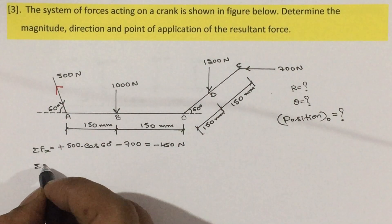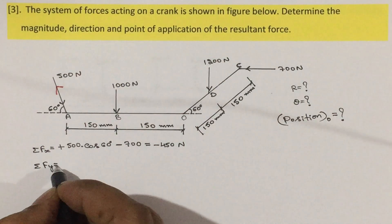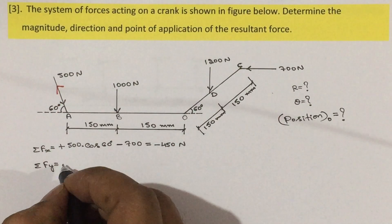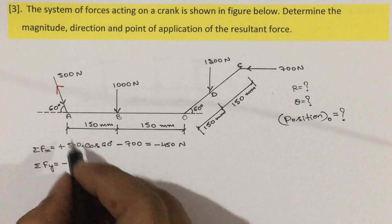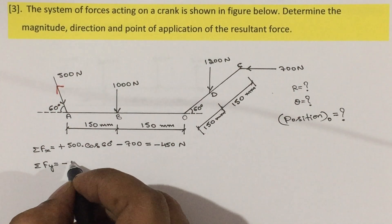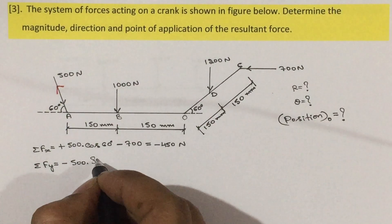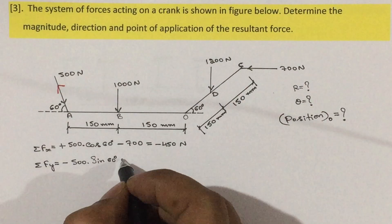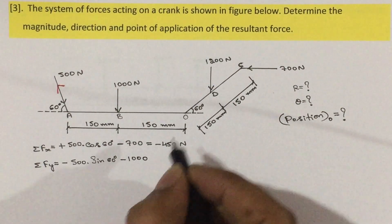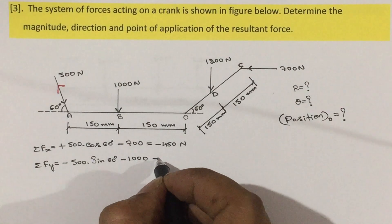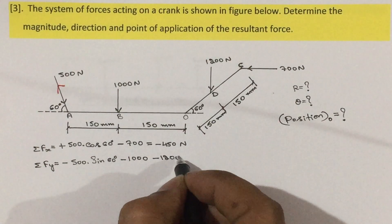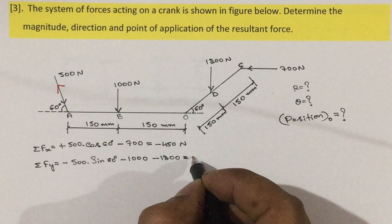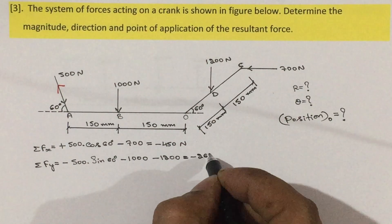Then calculate sigma Fy. The horizontal component — leave it. The vertical component is coming downward, so minus: F sin theta = 500 × sin 60°. Then the next vertical force is minus 1000, and the other vertical downward force is minus 1200. The horizontal force — leave it. Sigma Fy = minus 2633 Newton.